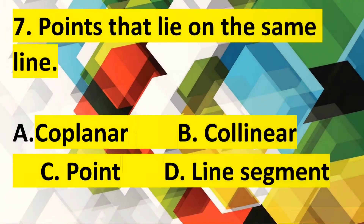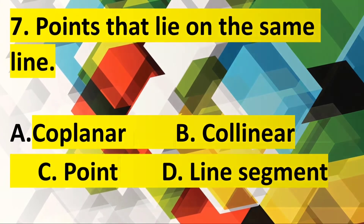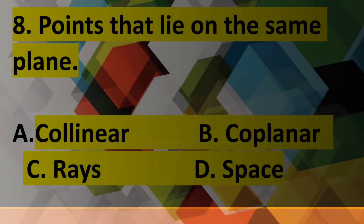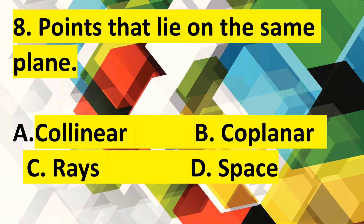Number seven: Points that lie on the same line. Number eight: Points that lie on the same plane.